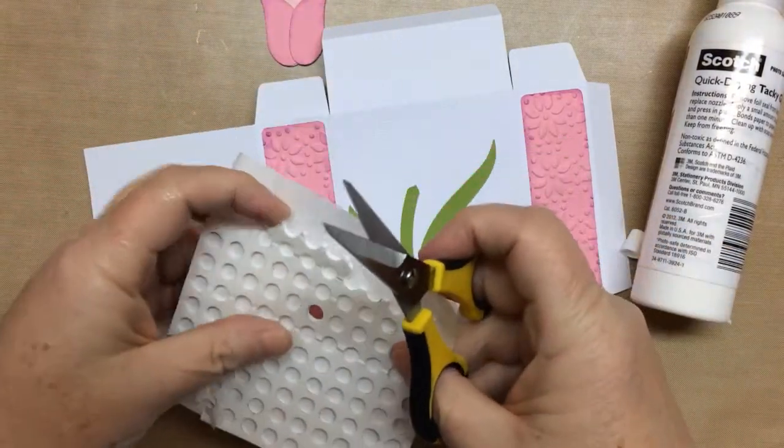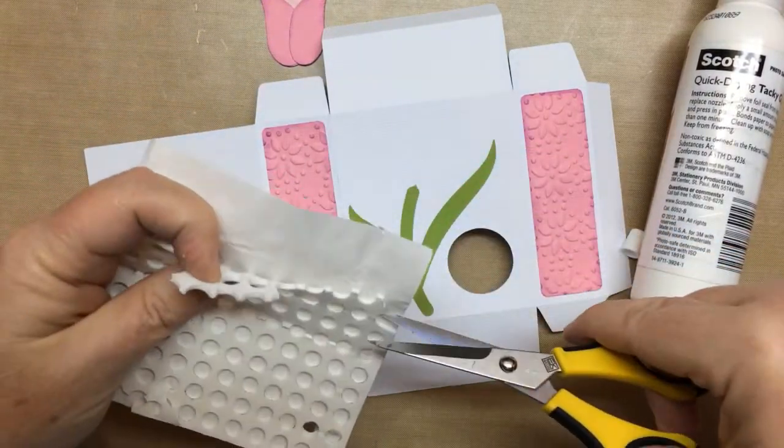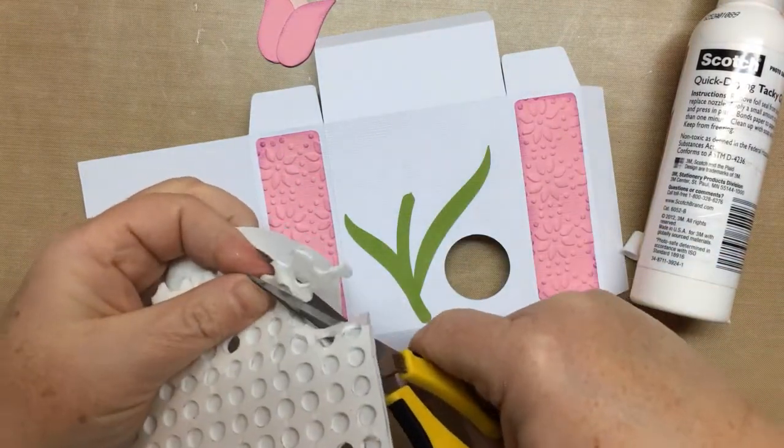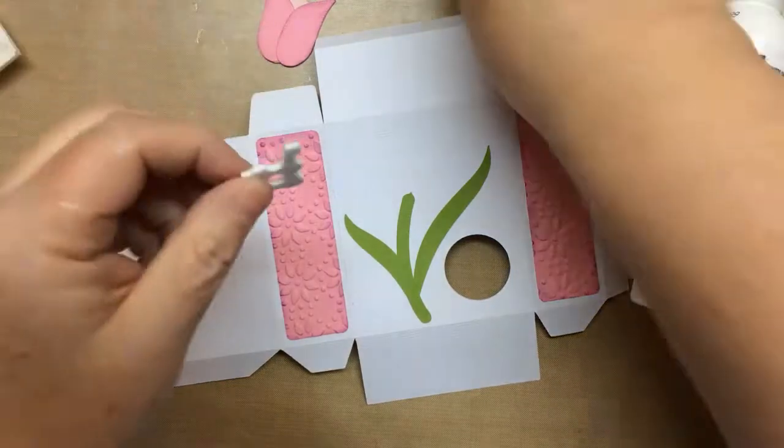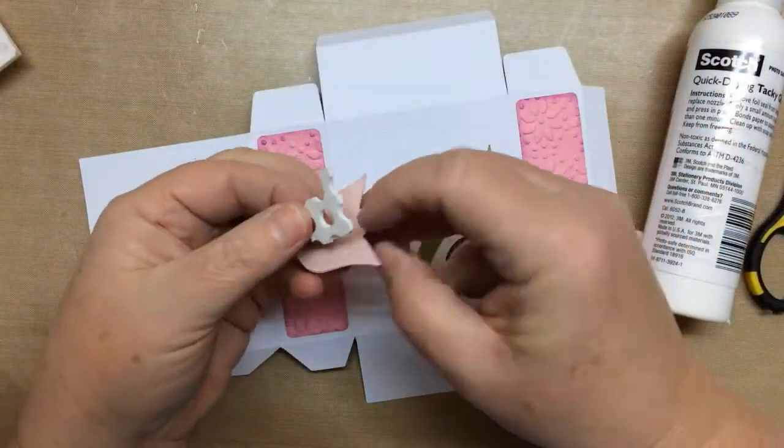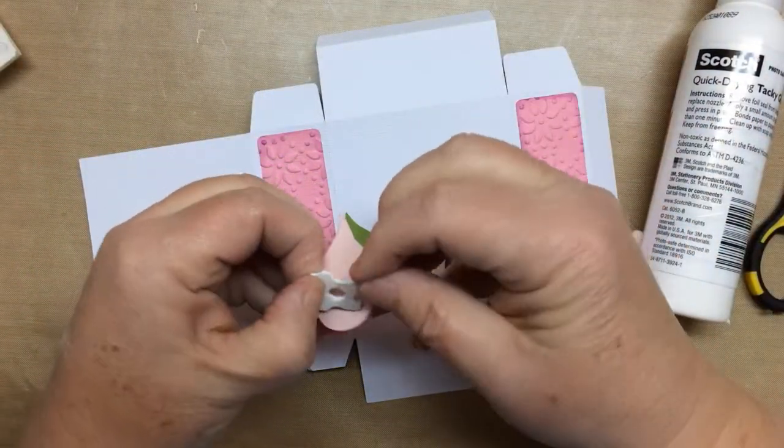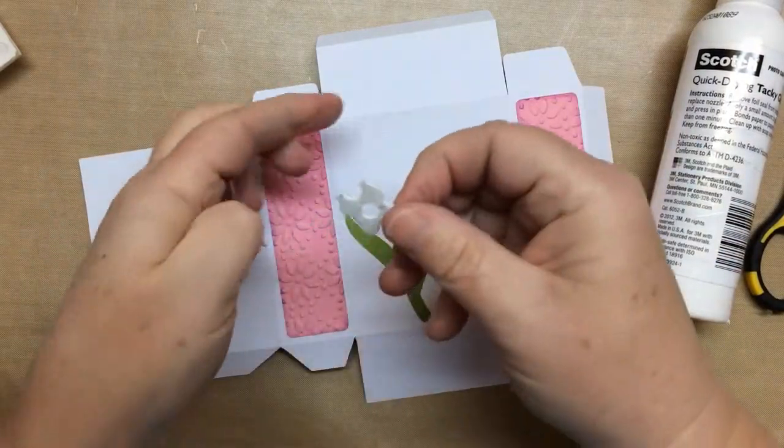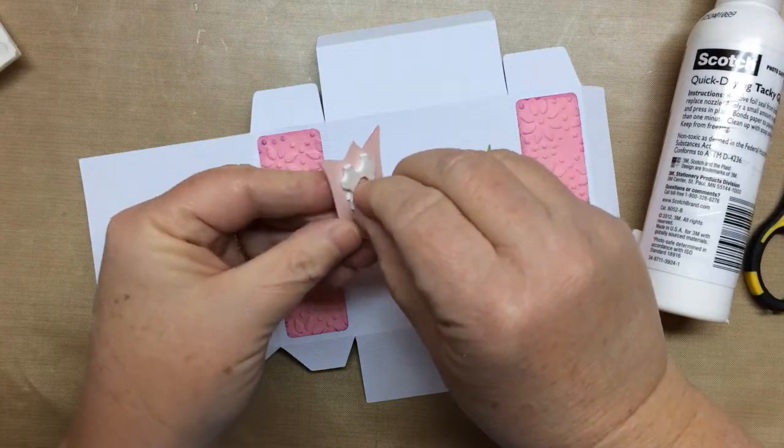Then I'm going to use remnants of foam dots. I don't like to get... there's no point in wasting this. You buy these little foam dots, and these other pieces are still useful. So this is kind of like pop-up dots. I want to pop up the tulip a little bit.